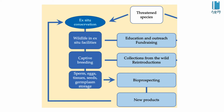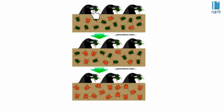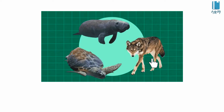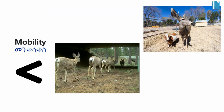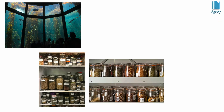Ex-situ conservation can enhance the probability of reproductive success for endangered species. Reproductive success is an important part of managing the reproductive habitat, though it provides less mobility for the population. Examples of ex-situ conservation include zoos, aquariums, seed banks, and botanical gardens.